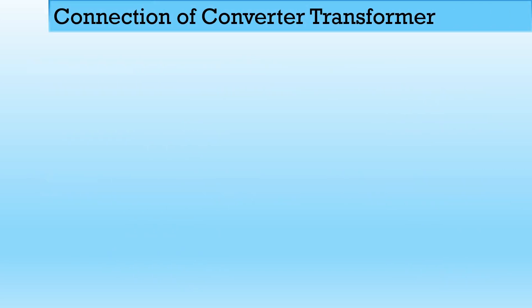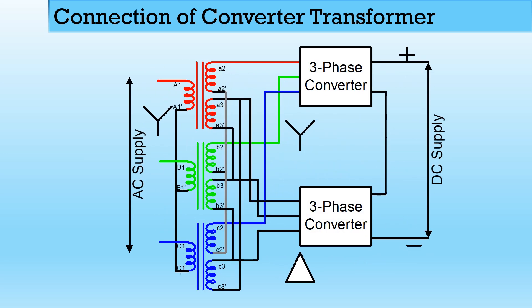For the connection of the converter transformer: on the AC side, there is one winding with terminals A1, A1 dash, B1, B1 dash, C1, C1 dash. A1 dash, B1 dash, and C1 dash are connected together to form a star. A1, B1, C1 are connected to the AC supply. On the secondary side, there are two windings with terminals A2, A2 dash, A3, A3 dash, B2, B2 dash, B3, B3 dash, C2, C2 dash, C3, C3 dash.